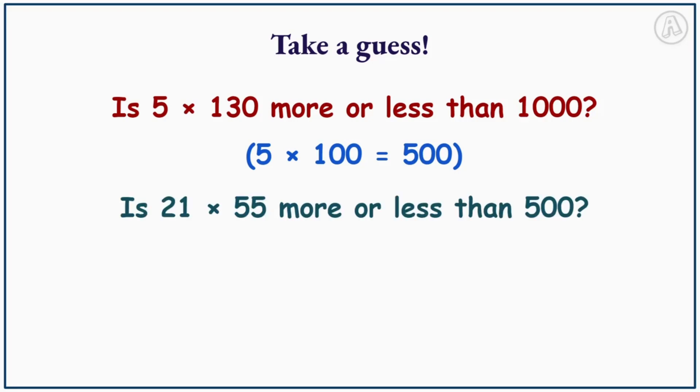Is 21 times 55 more or less than 500? Let's round to the nearest tens. So 21 becomes 20 and 55 becomes 60. 20 times 60 equals 1200. So do you think 21 times 55 is more or less than 500?